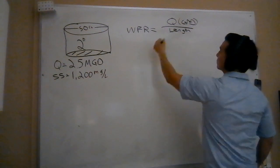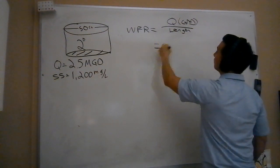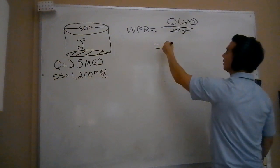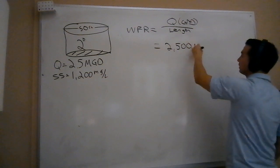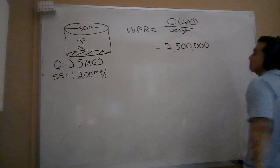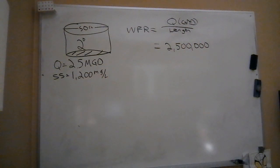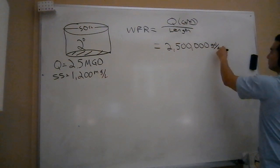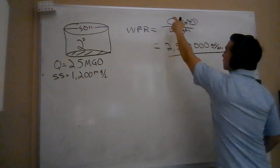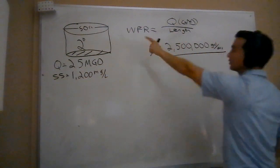My flow rate Q - I've already given that here - is 2.5 million. We're going to write that out all the way. With pounds formula, we like to plug it in as million gallons, but everything else we're going to write out in terms of gallons. So 2,500,000 gallons per day flow rate, and we're going to divide it by the length of my weir.